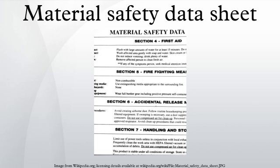The 16 sections are: Section 1, Identification of the substance, mixture, and of the company or undertaking. 1.1. Product identifier.